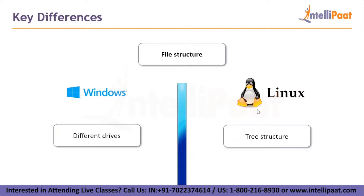Regarding file structure: files are organized as a tree structure in Linux starting from the root, while files are stored in different drives like C, D and E on Windows. File names are not case sensitive in Windows but they are case sensitive in Linux. The default command line for Windows is Windows PowerShell and for Linux it is Bash. The key difference is that Bash treats output as strings whereas PowerShell treats outputs as objects.